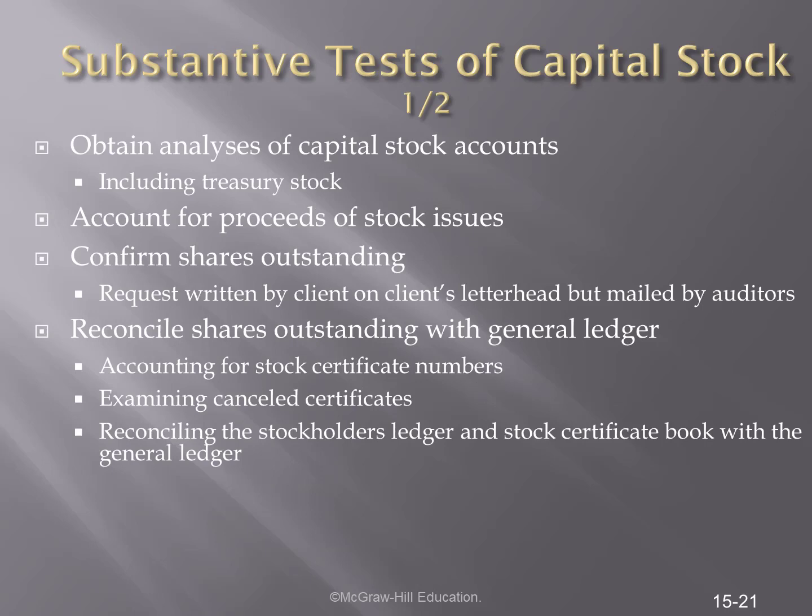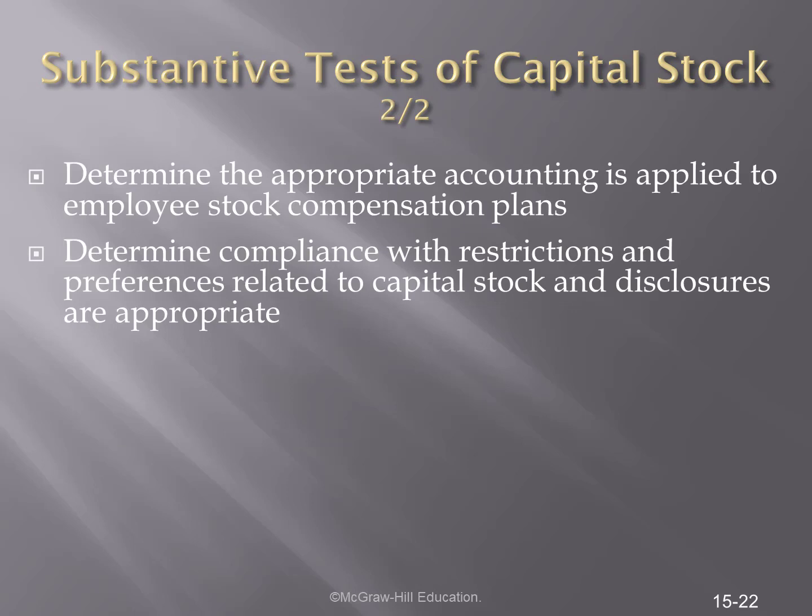Substantive testing where we are measuring monetary misstatement includes the following: we need to obtain an analysis of the capital stock accounts, including treasury; account for the proceeds of stock issues; confirm shares outstanding; reconcile shares outstanding with the general ledger; account for stock certificate numbers; examine canceled certificates; and then reconcile these with the general ledger. Finally, we would want to determine that appropriate accounting standards are applied to employee stock compensation plans, determine compliance with restrictions and preferential treatments related to capital stock such as preferred stock, and we want to determine that disclosures are appropriate.